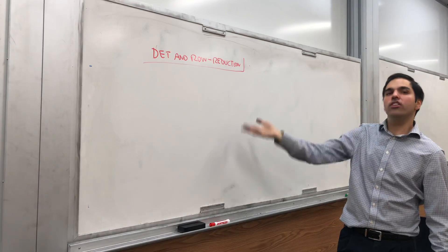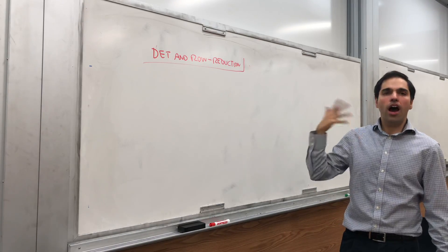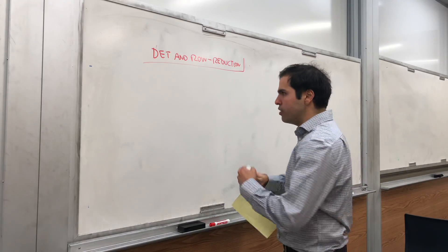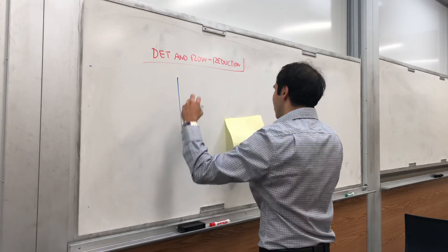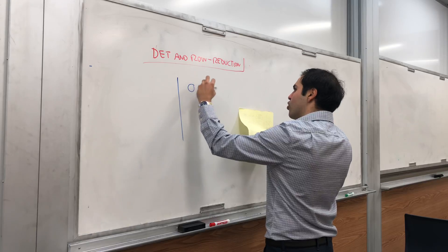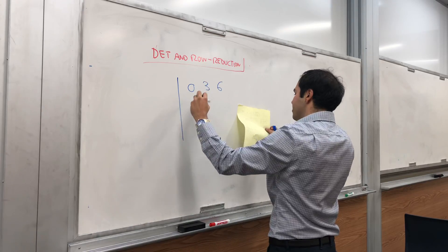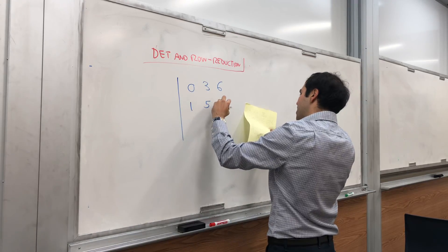you may ask, well how would a computer do this, or how can we do it more efficiently? And we do that using row reduction. So for example, let's calculate the determinant of 0 3 6, 1 5 -2, 1 2 -4.